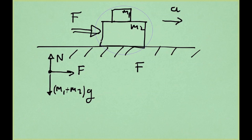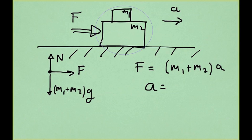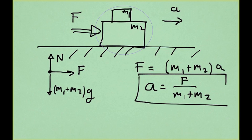Newton's second law applied to the combined object gives F equals (M1 plus M2) times A. Therefore, the acceleration equals F divided by (M1 plus M2). This holds provided the applied force does not exceed a certain maximum value we have yet to determine. To understand why that maximum exists, we need to explore the dynamics of each block independently.